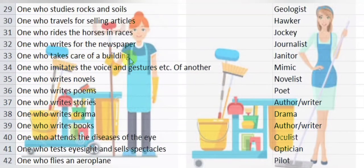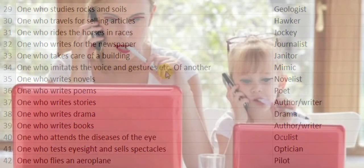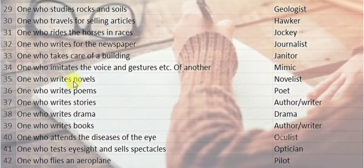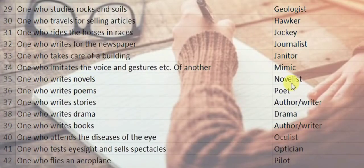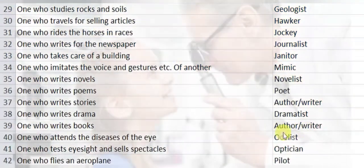One who takes care of a building is a janitor. One who imitates the voice and gestures of another is a mimic. One who writes novels is a novelist. One who writes poems is a poet. One who writes stories or books is an author or a writer. One who writes drama is a dramatist.